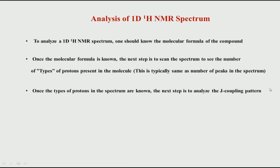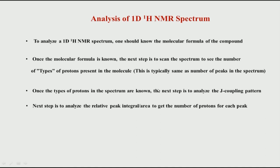For example, in ethanol CH3CH2OH, CH3 is one type, CH2 is another type, and OH is a third type — so there are three types of protons. CH3 gives one peak, CH2 gives another, and OH gives a third peak. The number of peaks in the spectrum corresponds to the number of proton types. After knowing the molecular formula, the second step is to inspect the spectrum to identify the number of proton types. Then the next step is to start analyzing the J coupling pattern, because J coupling tells you the number of nearby hydrogens.